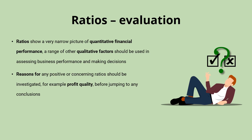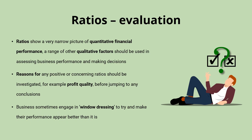We'd also want to look at any reasons for positive or concerning ratios and investigate them before jumping to conclusions. We might look at profit quality — whether the source of profit is likely to continue into the future. For example, one huge one-off sale might artificially inflate profitability ratios in one year, and we'd expect that to fall significantly in the future. We can also talk about window dressing, where people preparing the accounts might have a vested interest in the company looking good and move items around or be creative with reporting to make performance look better than it is.